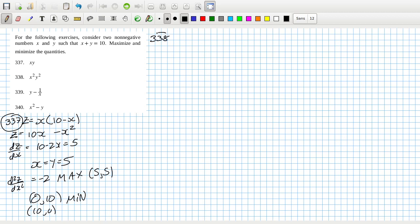338: So that's x squared times 10 minus x squared.